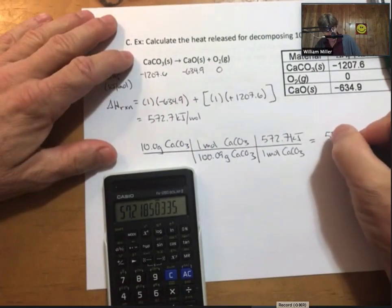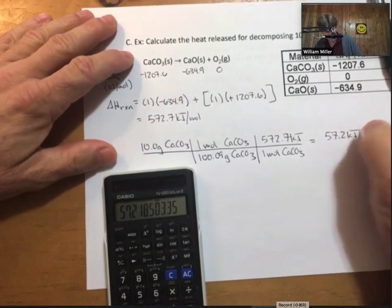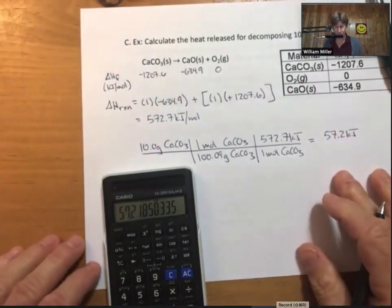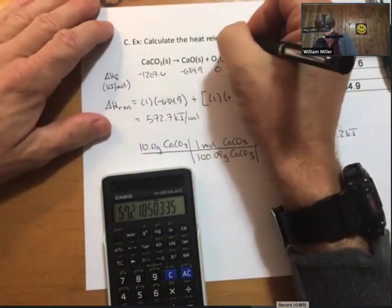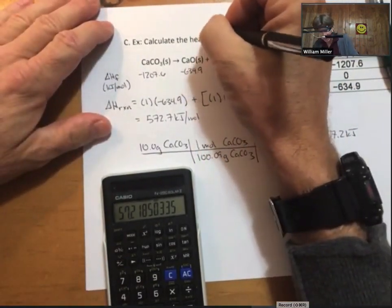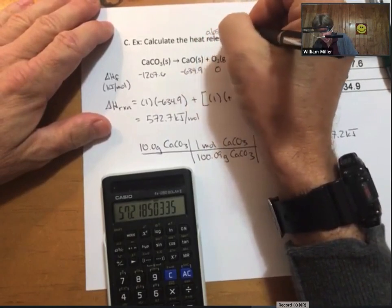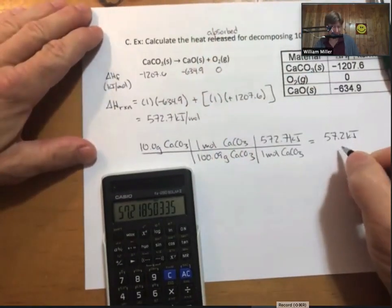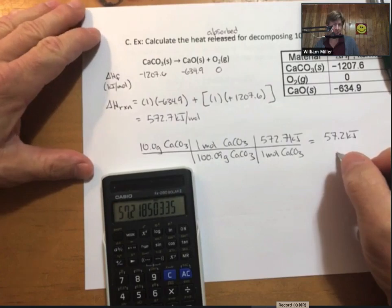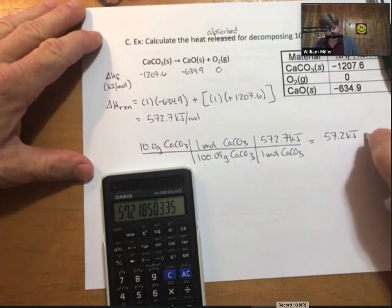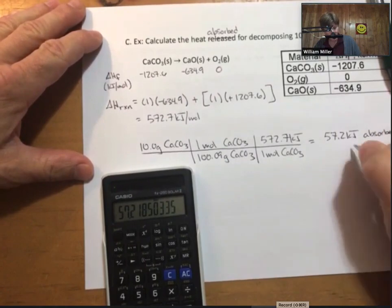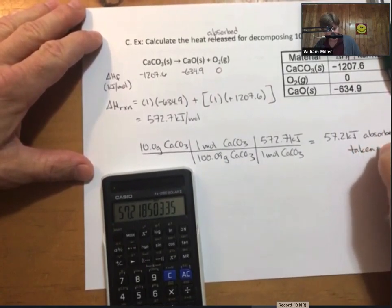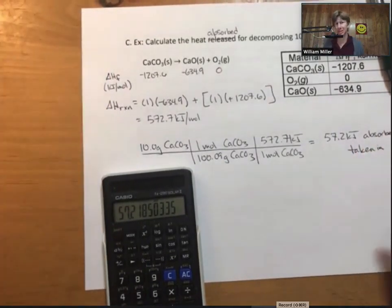Then for every one mole of calcium carbonate it takes 572.7 kilojoules of energy that are taken in. 57.2 kilojoules. It says heat released in the initial problem this is heat absorbed because it is positive which means it is taken in this is an endothermic reaction, absorbed or taken in. The positive number tells you that anyway.